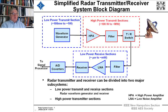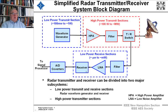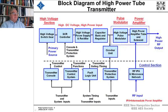The low-power transmit and low-power receive sections contain the waveform generator and the receiver, while the high-power transmitter section bridges the power levels. Many systems will have an intermediate power amplifier, either packed into the IPA stage or just after the waveform generator, depending on how the system architects divided it up.